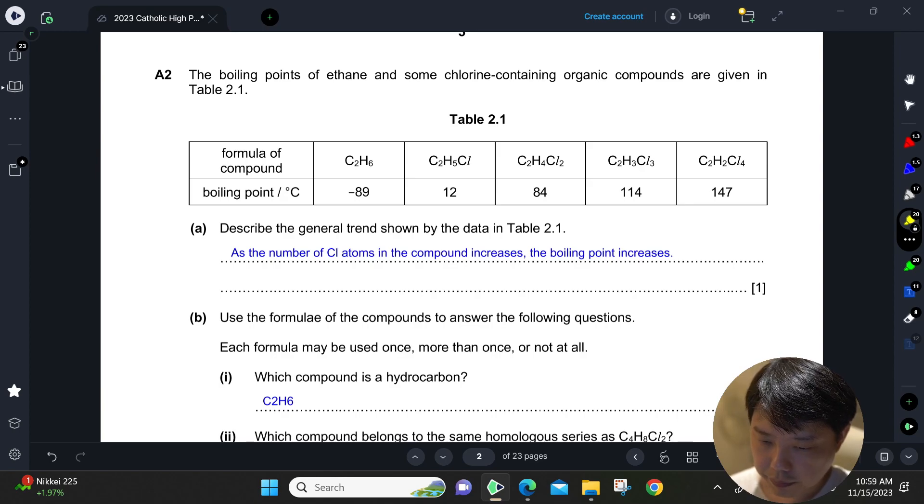So as you go to the right, you basically see that there is plus one chlorine atom and then the hydrogen you decrease by one hydrogen. So it's the same here, here, and also here.